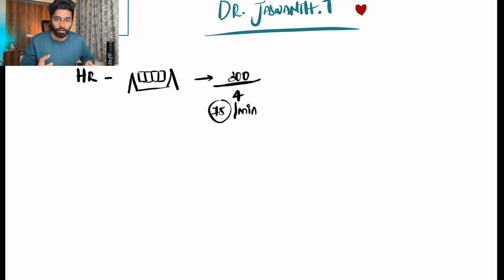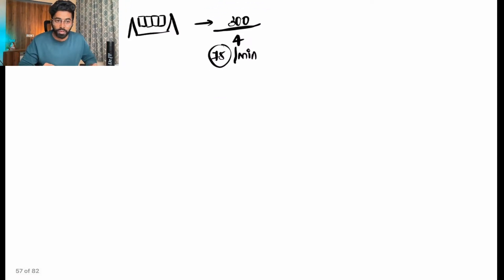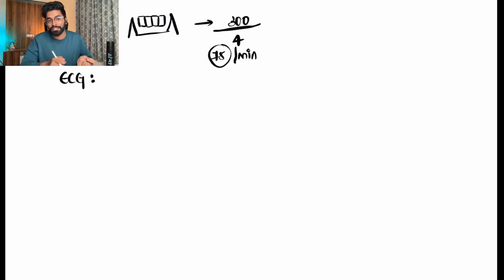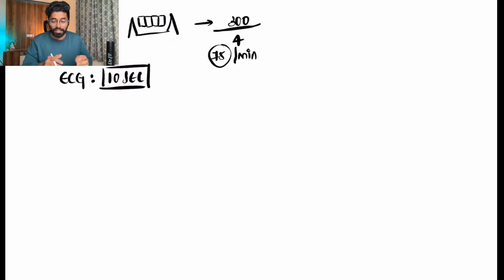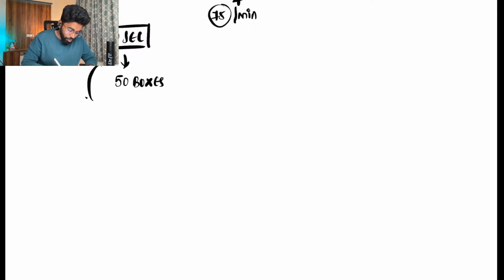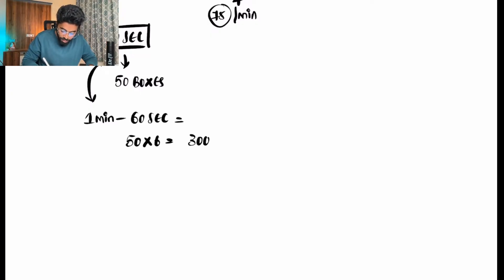That's where the basics come into action. An entire ECG strip takes 10 seconds to come out of the machine. If you count the total number of large boxes in that 10-second strip, there will be 50 boxes. To calculate heart rate for one minute, which is 60 seconds, we get 50 multiplied by 6, which equals 300 boxes — that's where this 300 comes from.